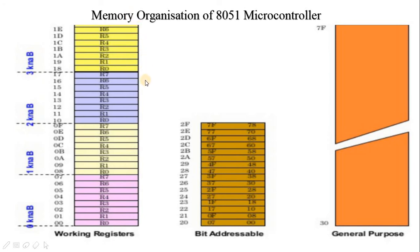Let's see the internal RAM organization. The internal RAM contains 128 bytes organized into 3 groups. The first 32 bytes, from address 00 to 1F, are organized as 4 banks of 8 registers R0 to R7 each, giving 32 working registers total. The 4 register banks are numbered 0 to 3. Bits RS0 and RS1 in the PSW (processor status word) determine which bank is in use. A register bank not selected can be used as general purpose RAM.